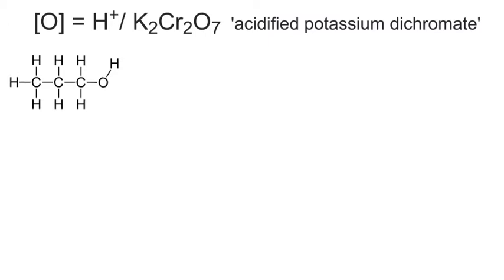The first kind of oxidation I'm going to do is under a distillation, and it's going to turn this primary alcohol — the propan-1-ol — into an aldehyde.